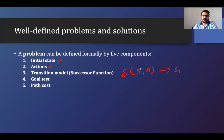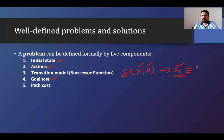In the transition function, we give the current state and we perform some action on that current state, and we reach the next state. That is done by the transition model. Then we have the goal test — whenever we reach a new state, we have to compare with the goal whether we have achieved it or not.